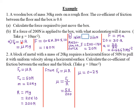For part A, frictional force is given by the coefficient of friction multiplied by the normal reaction. We denote frictional force as Fr, mu represents the coefficient of friction, and R is the normal reaction. Because we need to find the frictional force and we are already given mu, the coefficient of friction, we need to find the normal reaction.